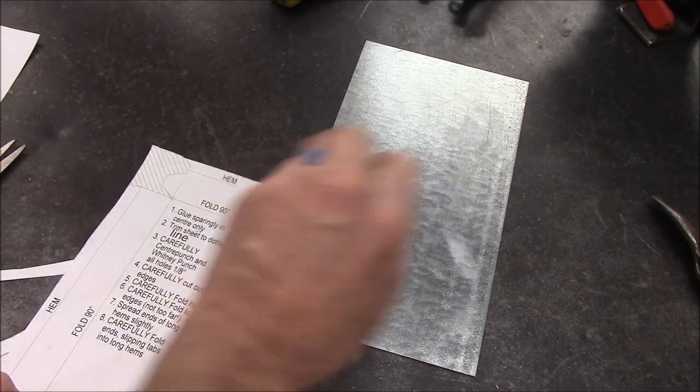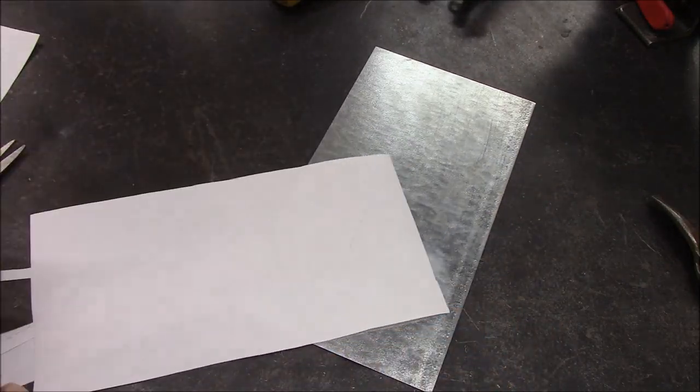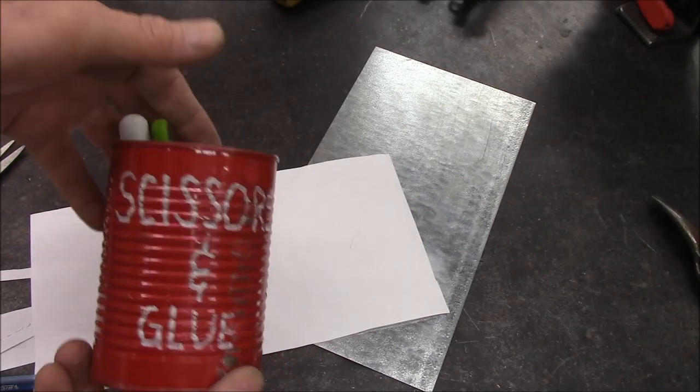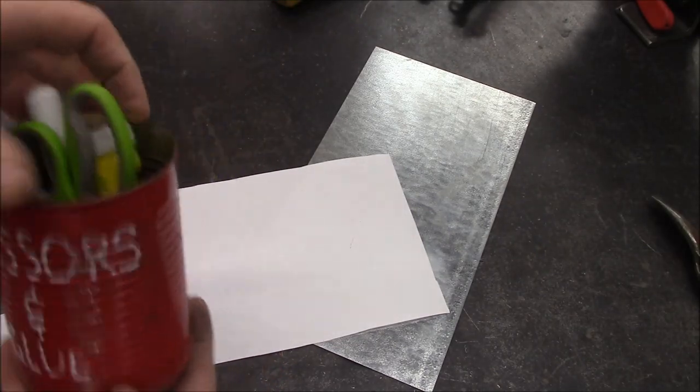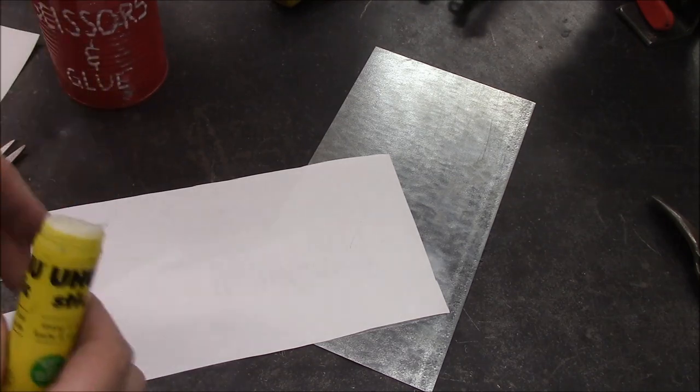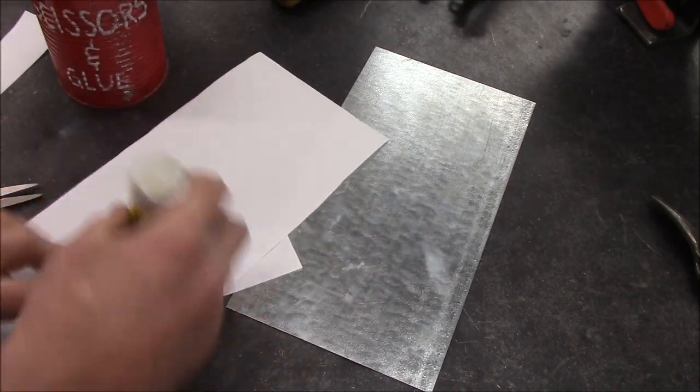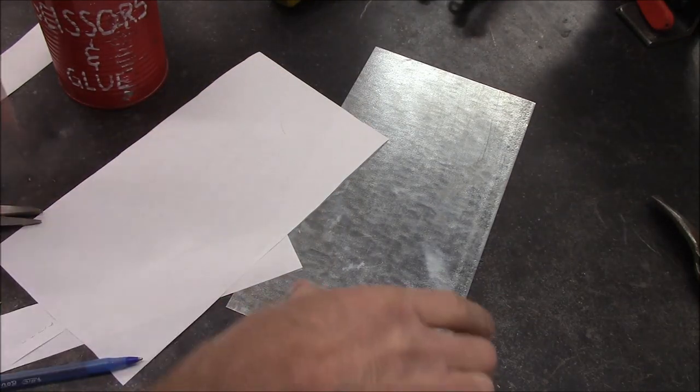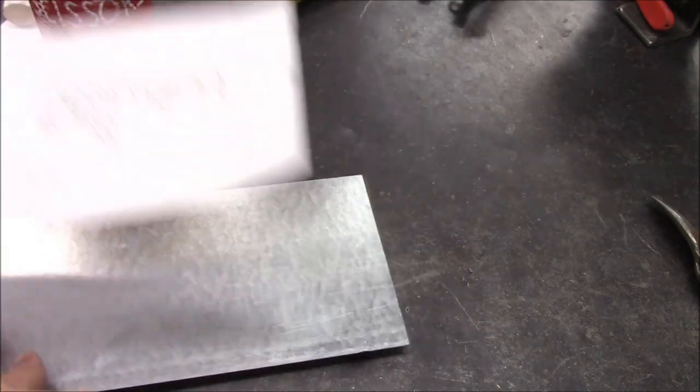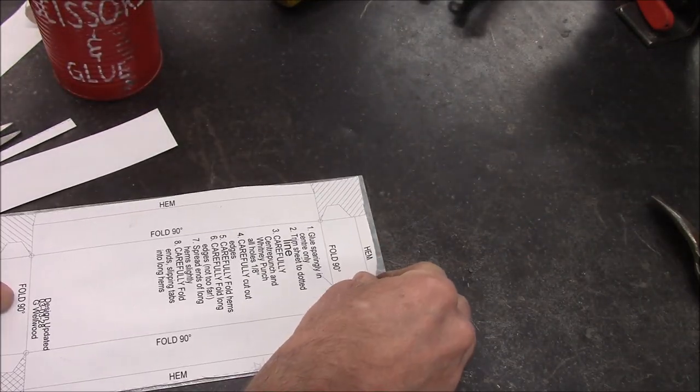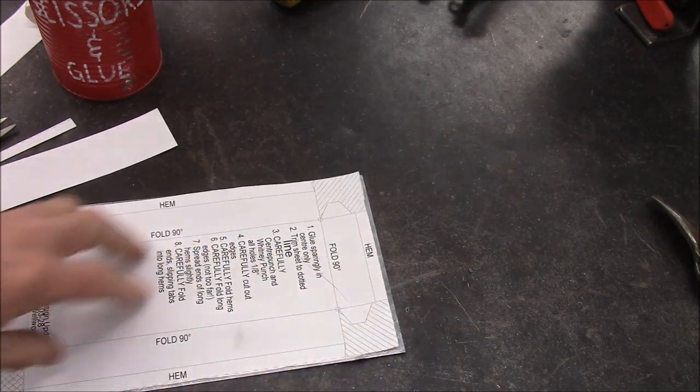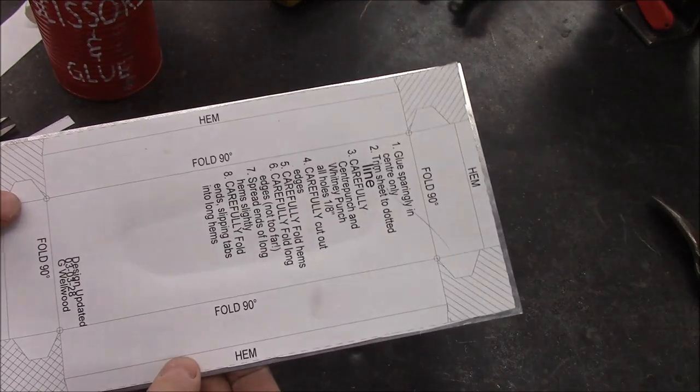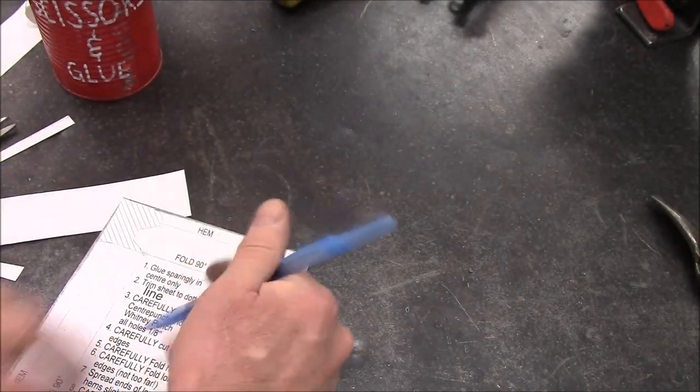First step, glue sparingly in center only. Sparingly means not much. I've got a tin can labeled scissors and glue. Do not run with these. I've got some glue sparingly in the center. That way you can remove the paper when we're all done. If you glue the mother-loving snot out of it, it's harder to do. I've pre-cut all the tin.